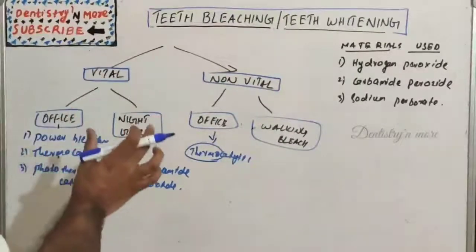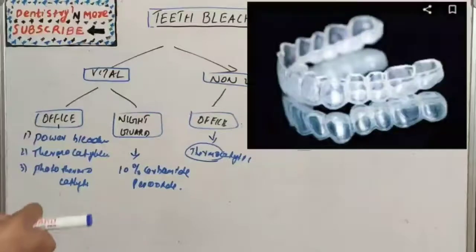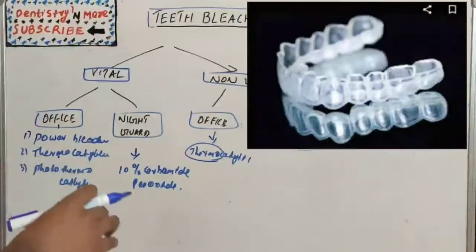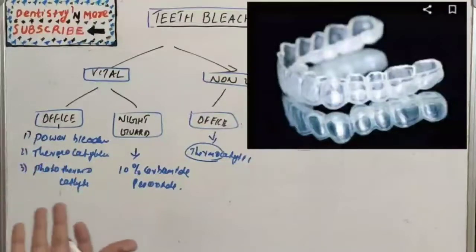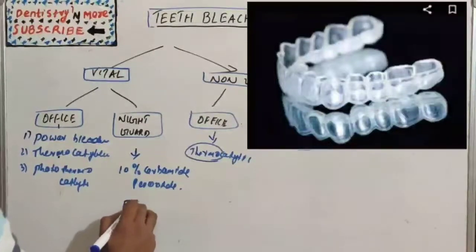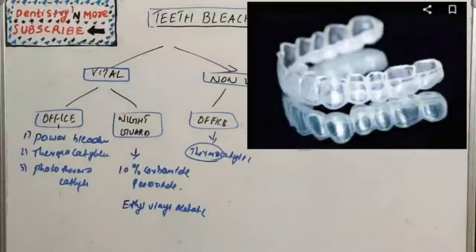The key step in night guard bleaching is fabricating the tray for the patient. First, take an impression and make a stone model, trim the model, place the stock resin, and cure it. Apply separating media and choose the tray sheet material — the tray must be very flexible so the patient can easily wear it. The most common material used is ethyl vinyl acetate. Cast the plastic in a vacuum tray-forming machine, then trim and polish the tray, checking it for correct fit, retention, and over-extension.